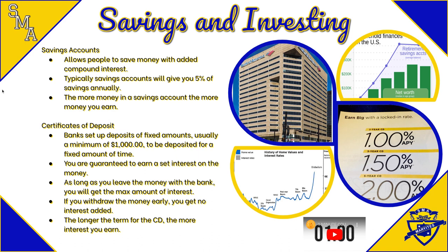Generally, people save money in their savings account and then, when they hit a certain amount, they move it into a CD. Banks need this because that's how they use customer money to operate — they take your money for say ten years, lend it out to someone else or use it for other accounts, and that's why they give you the extra money when you get it back.